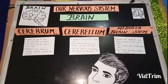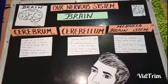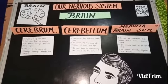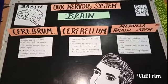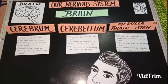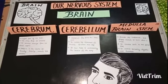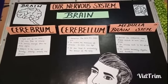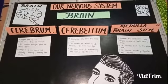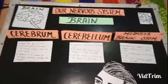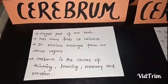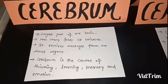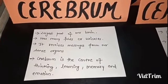Let's zoom into the world of the brain. Here you can see three different parts: first we have the cerebrum, second is the cerebellum, and third is the medulla, also called the brain stem. The cerebrum is the largest part of our brain.